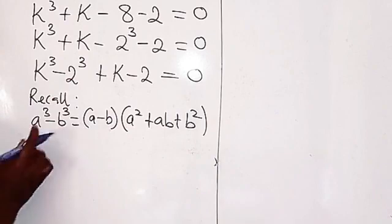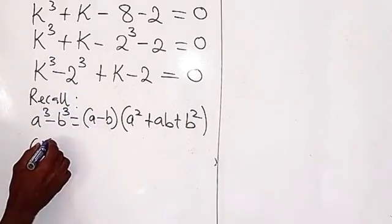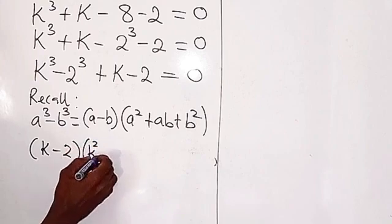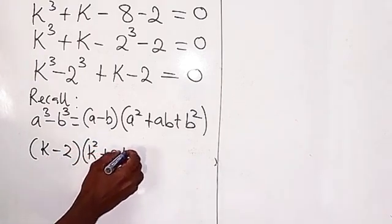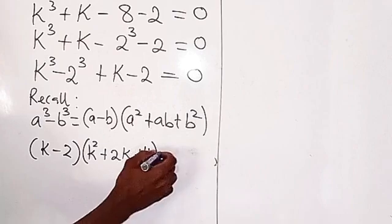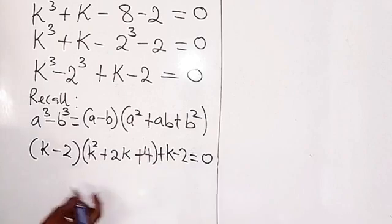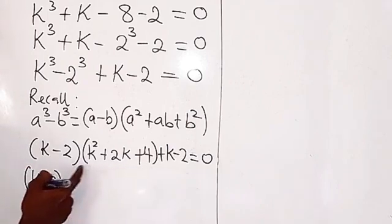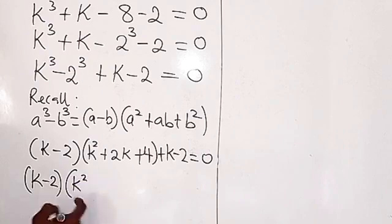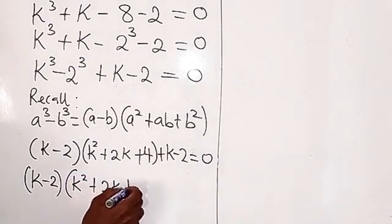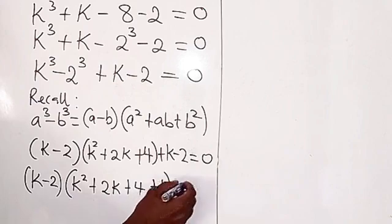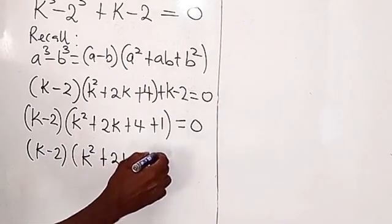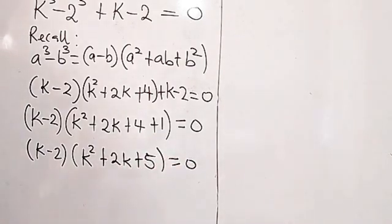So we can see that this is in that form. We are going to have k minus 2, then k squared plus 2 times k plus 4, then we have plus k minus 2 equals 0. Looking at these two terms, you can see k minus 2 is common. So we have k minus 2. If you divide through by this, we are going to have k squared plus 2k plus 4, then plus 1 equals 0.